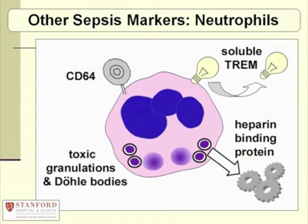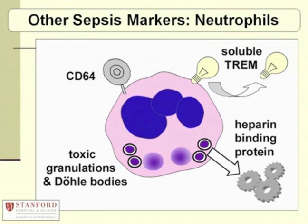We know in the laboratory that when someone has severe sepsis, we see in their polys toxic granulations or Döhle bodies — changes in lysosomes and leakage where the poly is so activated that lysosomes are leaking and proteolytic enzymes are starting to dissolve the cytoplasm. There's a marker called CD64, an activation marker detectable by flow cytometry, which is a much earlier marker of poly activation. This has a lot of promise, especially since clinicians ordering white cell count and differential can simultaneously detect CD64 as an additional helpful piece of information.